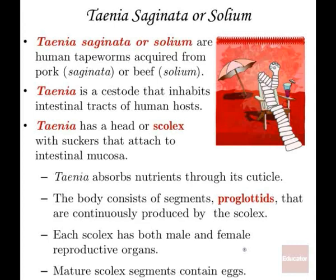The second example we're going to talk about are tapeworms. There are two different kinds: the beef tapeworm, Taenia saginata, and the pork tapeworm, Taenia solium. Both are intestinal worms — cestodes — and they are obligate parasites. In this lecture, I'm going to talk about the different anatomical structures of the tapeworm and then discuss some of the issues that occur with this organism.